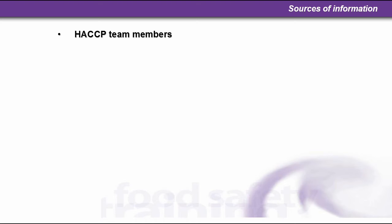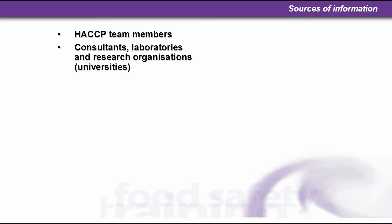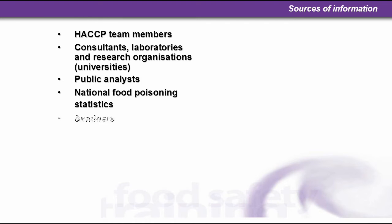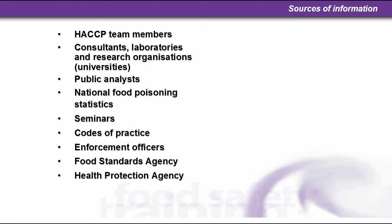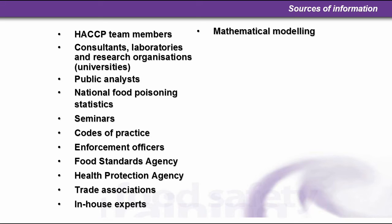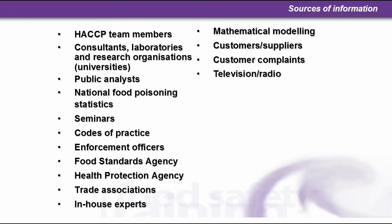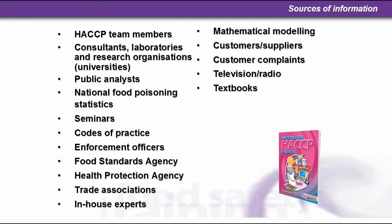Sources of information could come from the HACCP team members themselves, individual experts in their own fields, consultants, laboratories, research organizations, and universities. Other sources include public analysts, national food poisoning statistics, seminars, codes of practice, enforcement officers, environmental health practitioners, the food standards agency, health protection agency, trade associations, in-house experts, mathematical modeling, customers, suppliers, customer complaints, television, radio, textbooks, magazines, and libraries.